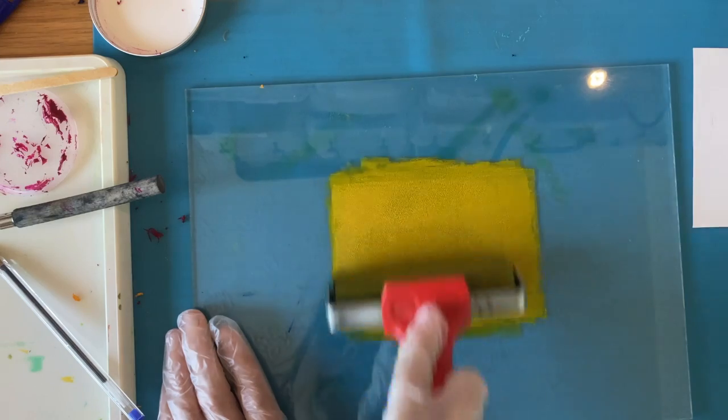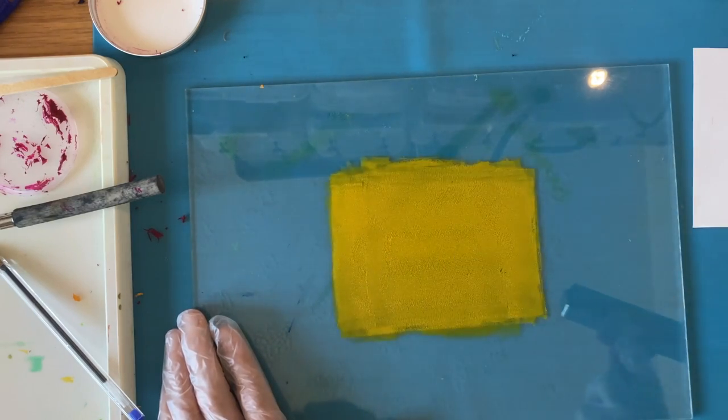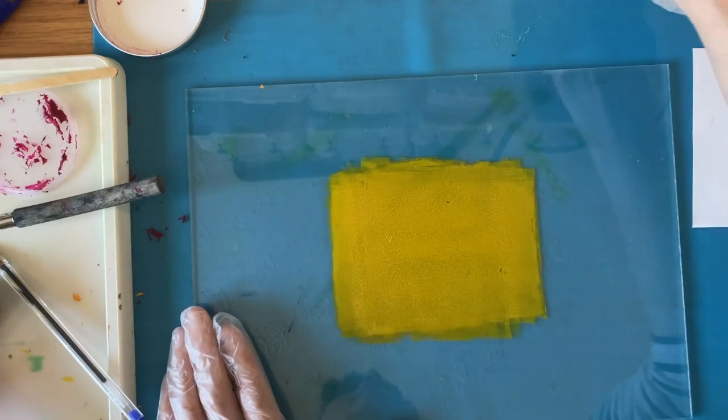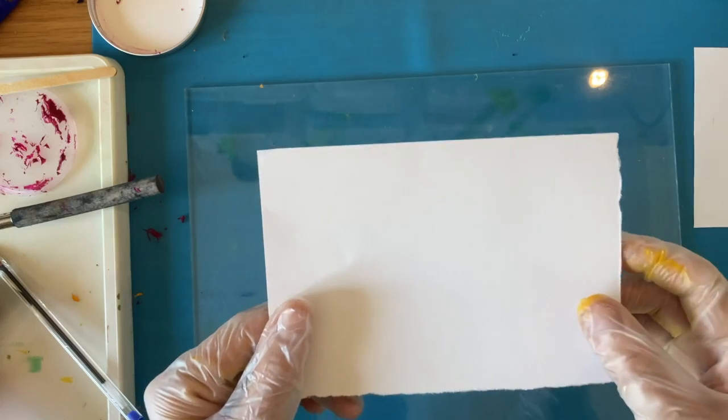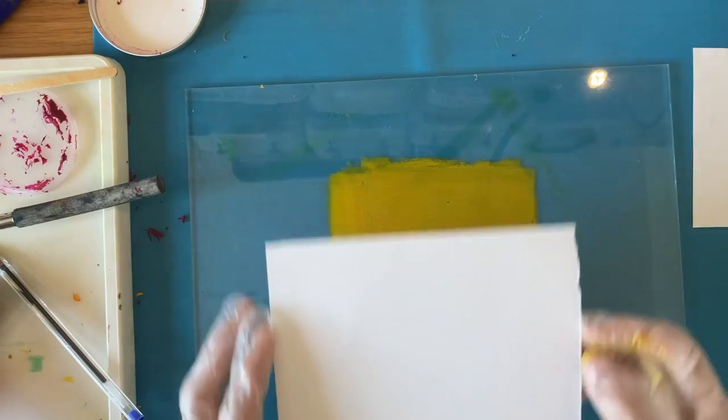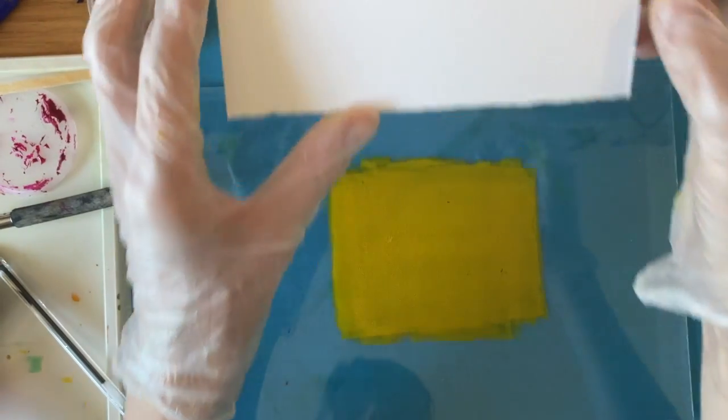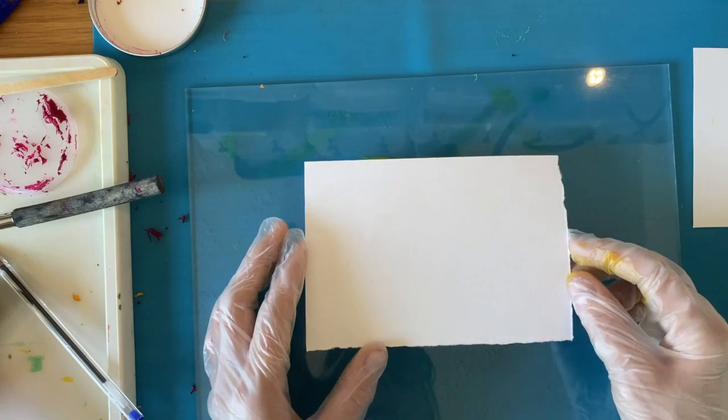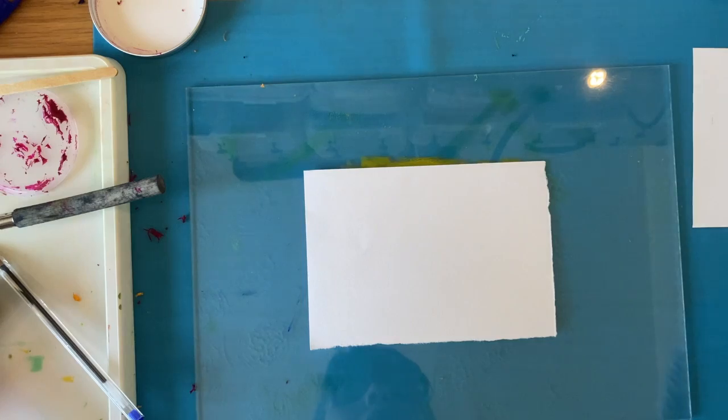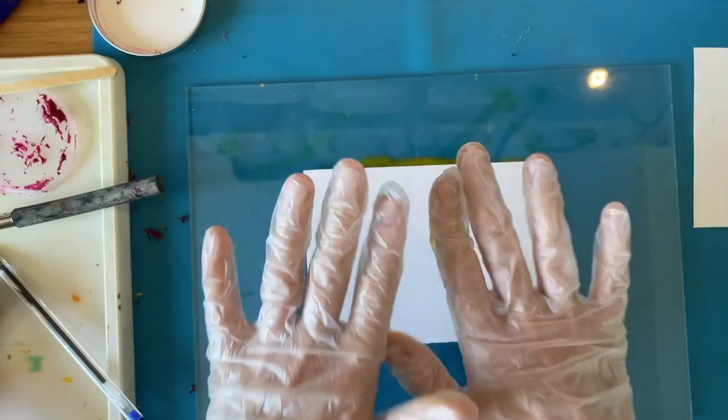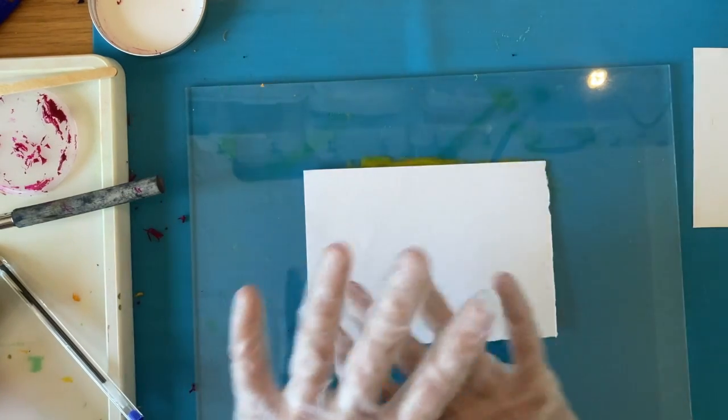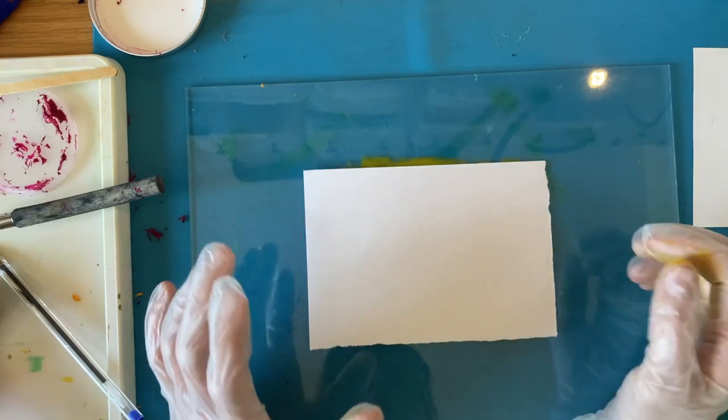So you'll have a square in the middle. That's about as big as you want it. I've just given you quite small pieces of paper. Once you think it looks even, like that, you can pop that roller back in the tray and then you can take a piece of paper.